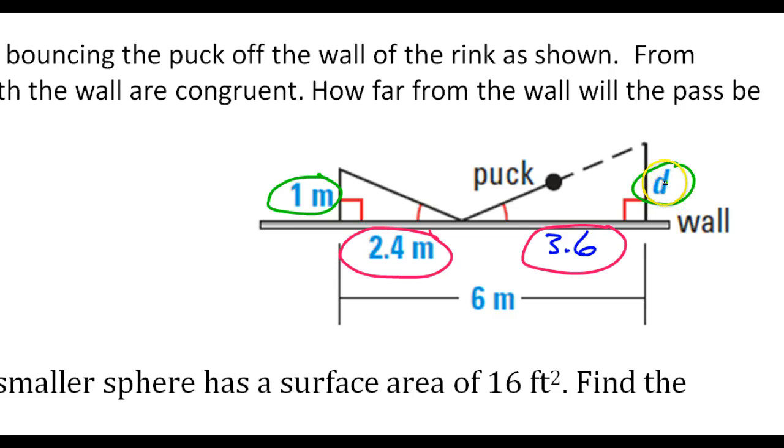So for example, let's do it this way. D over 1, I'm doing green over green, should equal 3.6 over 2.4.